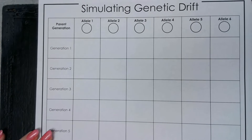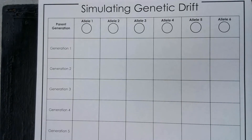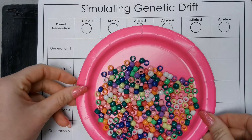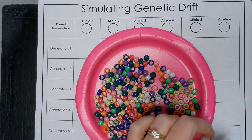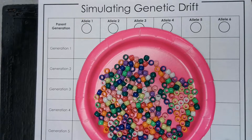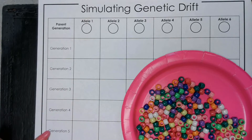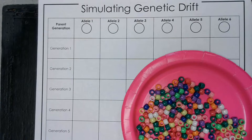Today we are going to do a genetic drift lab — a simulation that hopefully will help you better understand how genetic drift operates. We're going to use some colorful beads to represent alleles in a small population, and we're also going to use a dice. We're going to roll the dice to simulate reproduction within this small population. We're going to witness random changes in the allele frequencies over successive generations — through five generations — and gain insight into the unpredictable nature of genetic drift and its consequences on genetic diversity within a population.